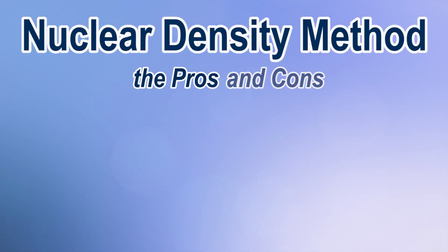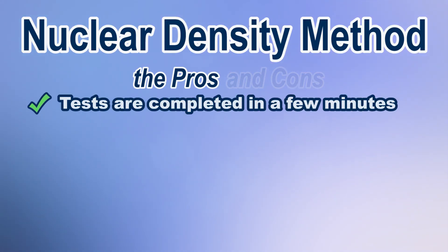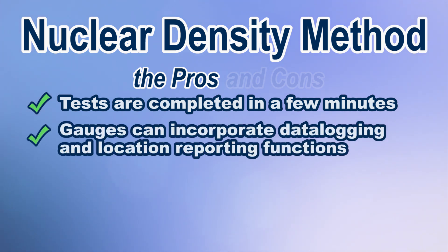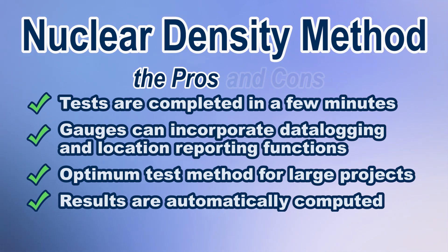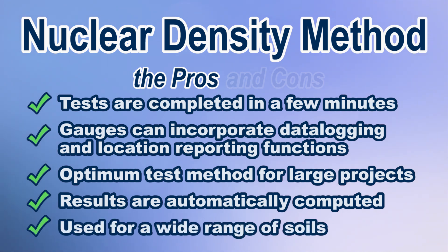The pros of the nuclear density test are: density and moisture tests are completed in a few minutes; nuclear density gauges can incorporate data logging and location reporting functions; it is an optimum test method for large projects requiring many tests per day; density and moisture content are automatically computed by the nuclear density gauge; and the test method can be used for a wide range of soils.